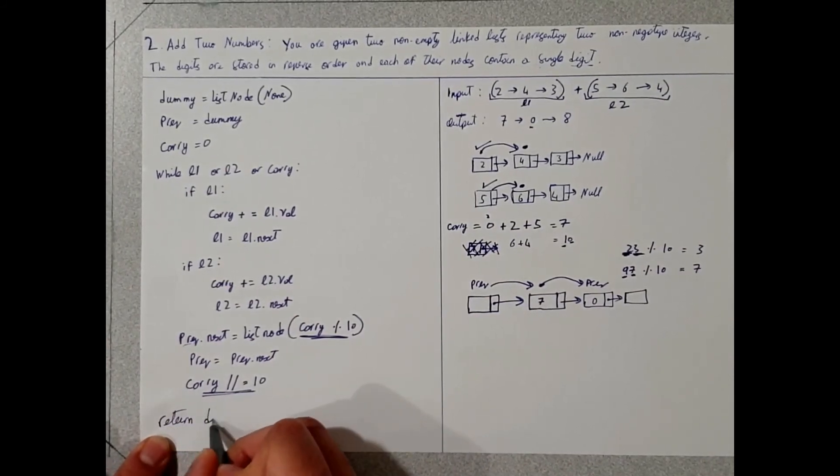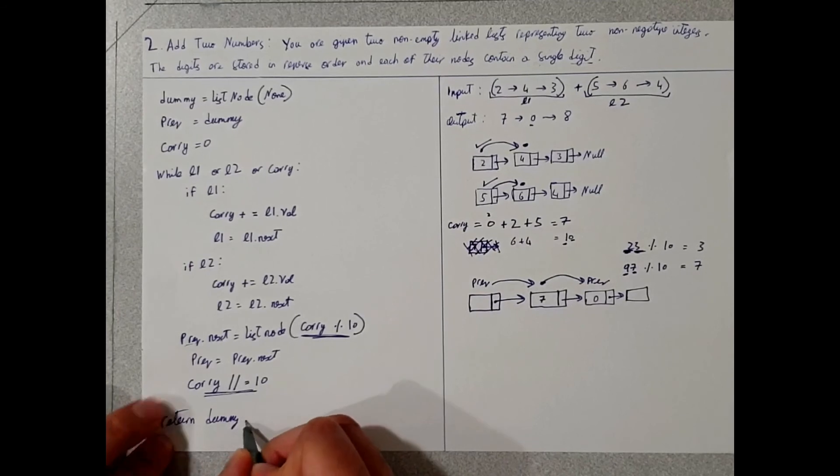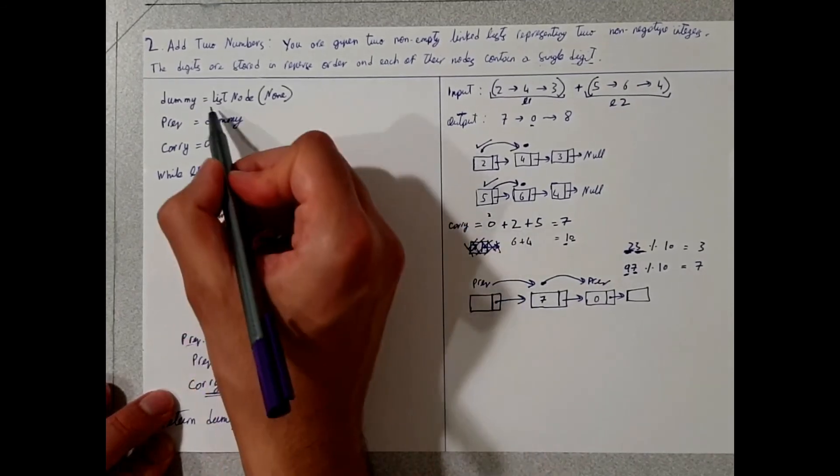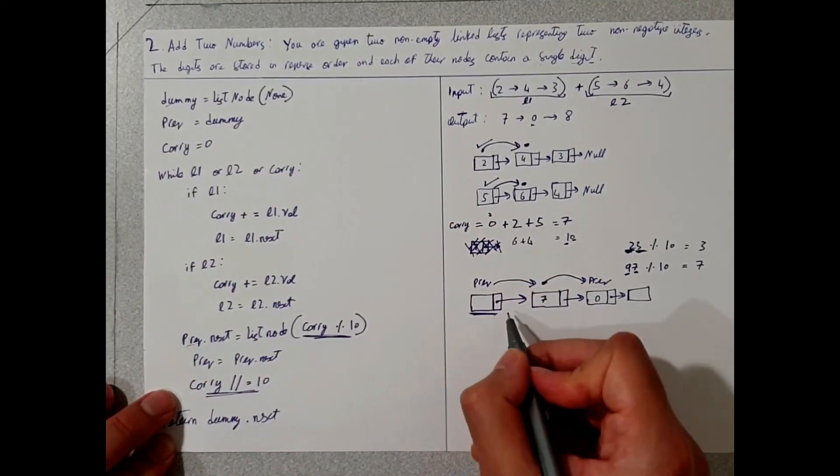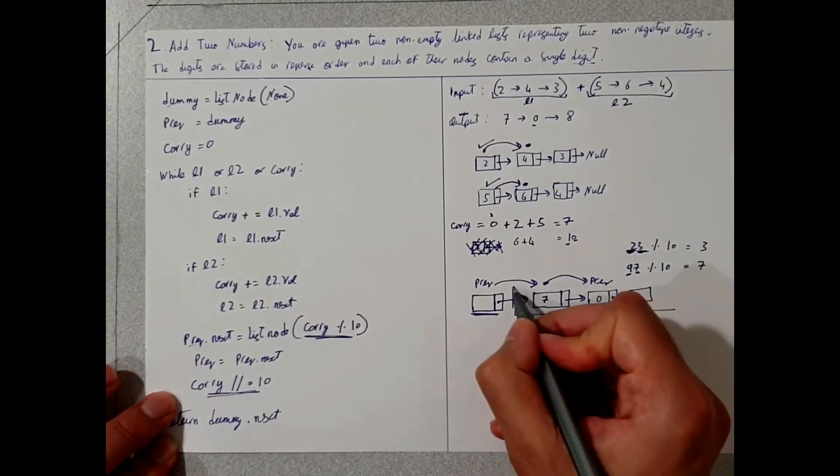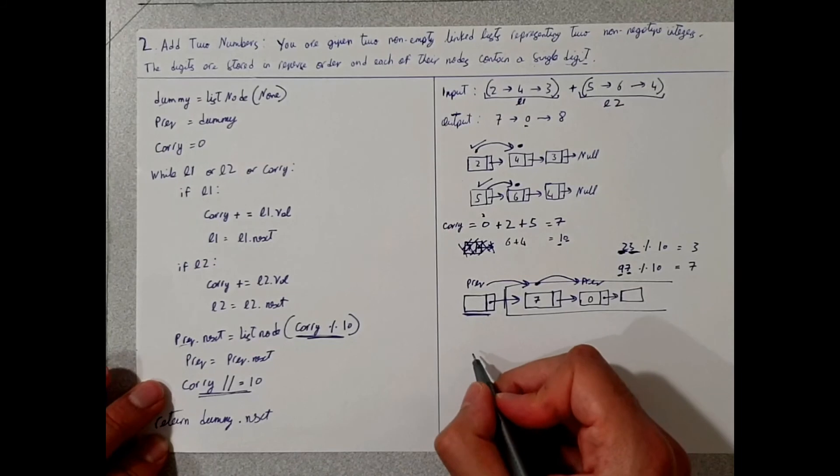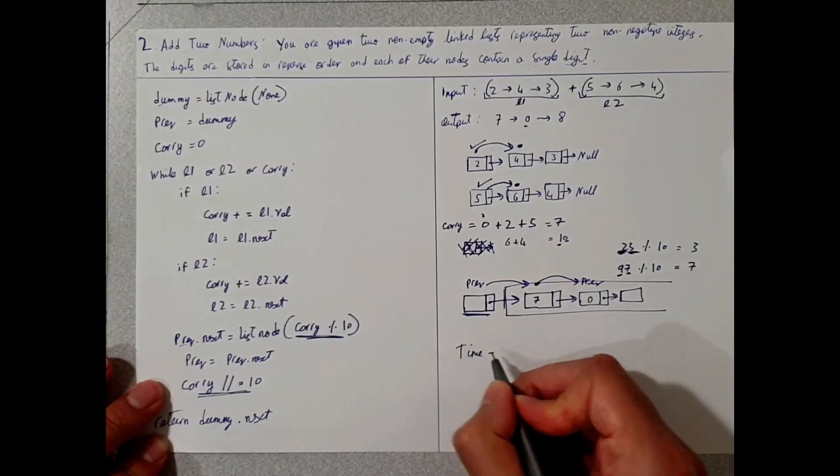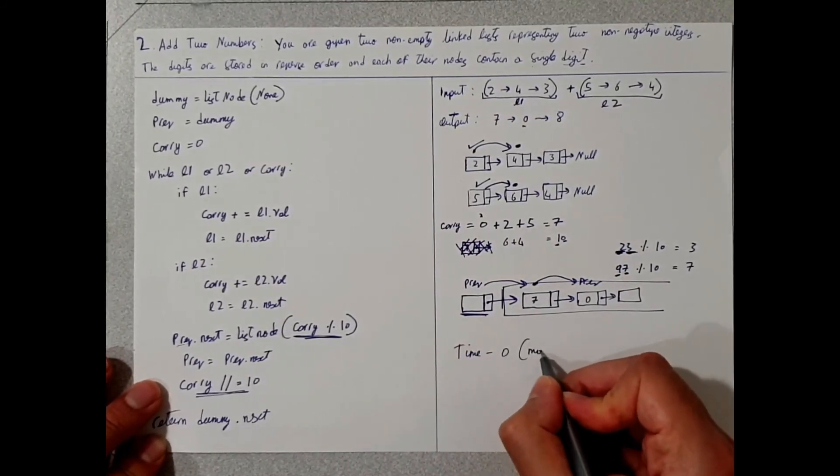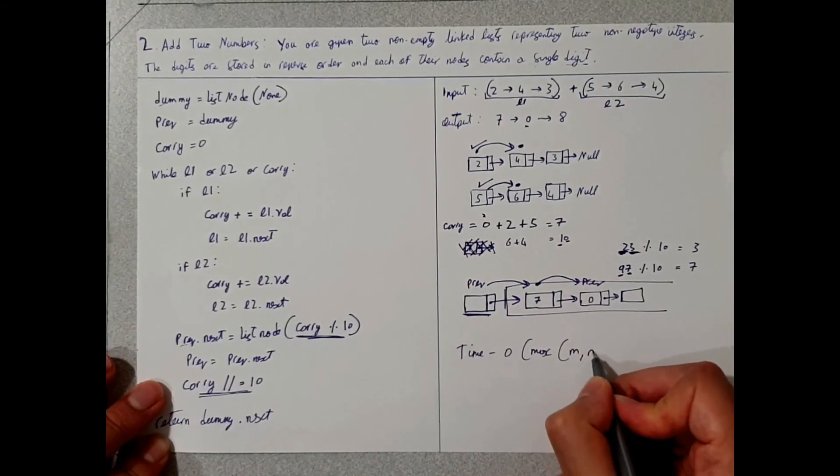we will return dummy dot next. Again, the dummy was this list node here. We're going to return everything on the side, which will be your value.